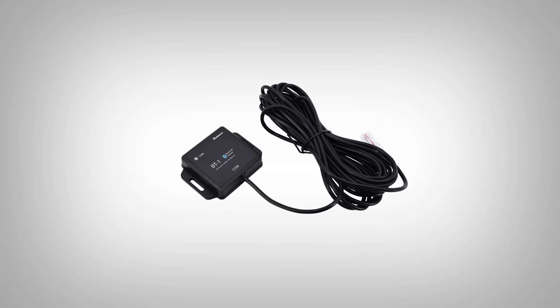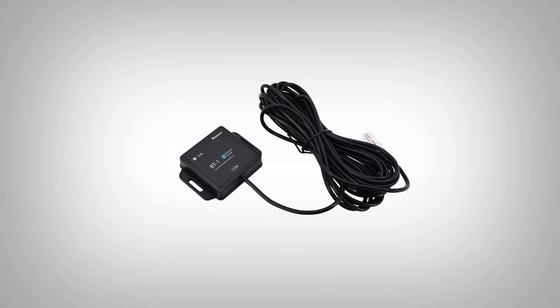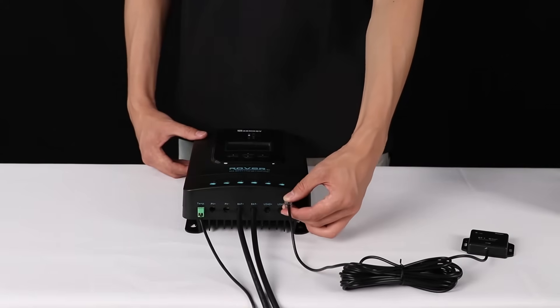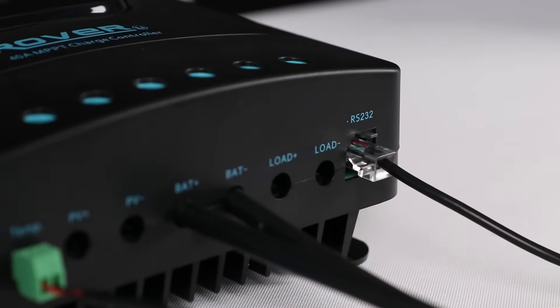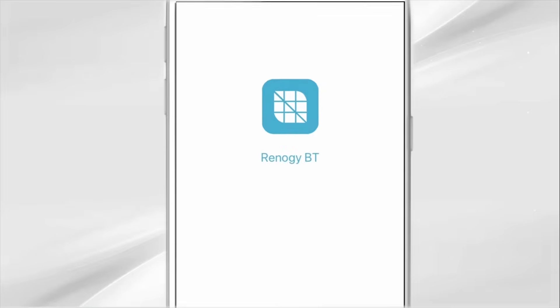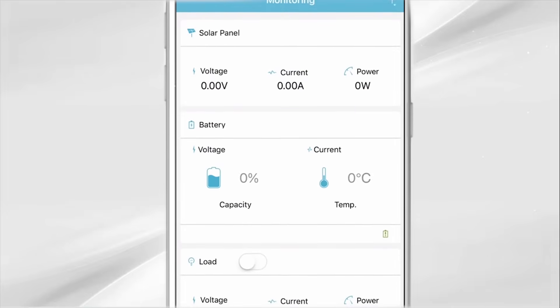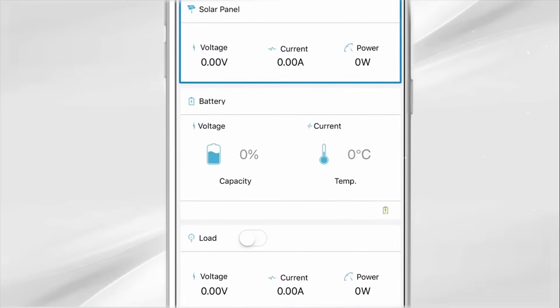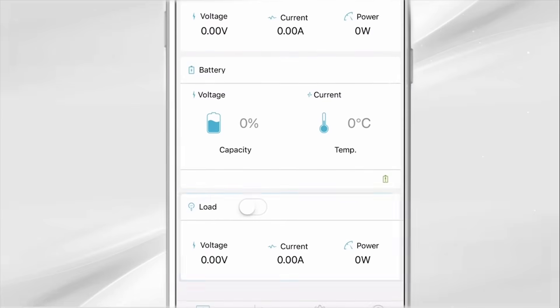The Rover is compatible with the Renogy BT-1 Bluetooth module. The BT-1 module connects to the Rover using the RS-232 port. The Renogy BT allows for remote monitoring and parameter changing directly via the app. Download the Renogy BT app from your smartphone's app store.